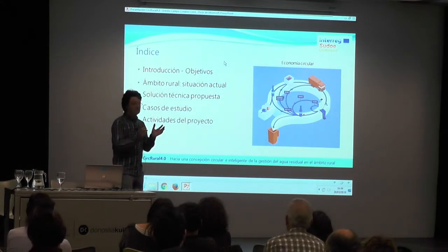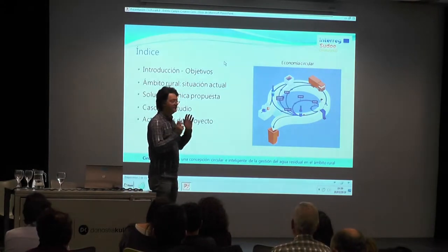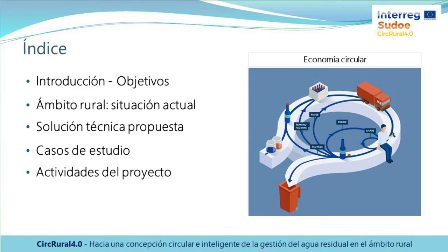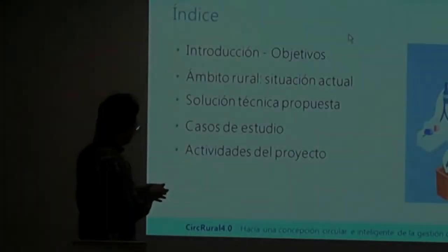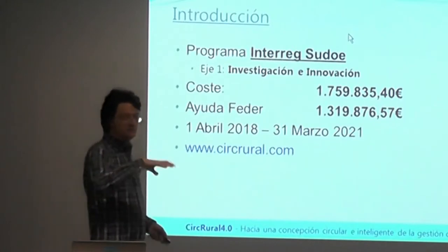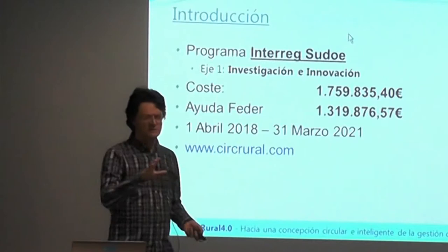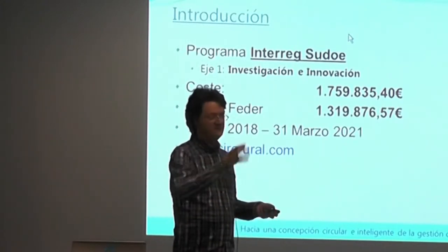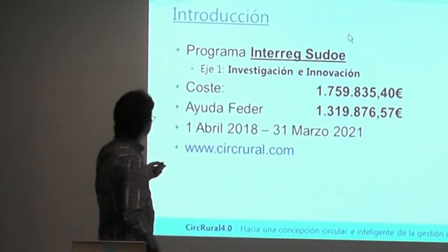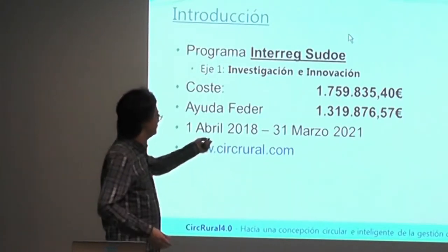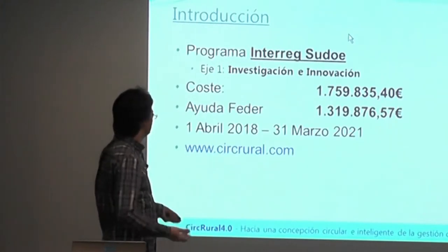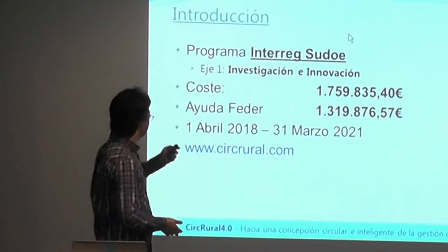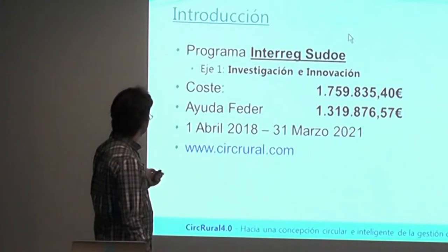In this project, what we are trying to do is bring these two concepts — Circular Economy and Industry 4.0 — to wastewater treatment, particularly in the context of rural areas. The project is a collaboration; we have nine partners. Interreg Sudoe is a program that promotes collaboration between entities in southern France, Spain, and Portugal. The project budget is around 1.8 million euros, of which 1.3 million is financed. It is a three-year project, and you can find more information on the project website.